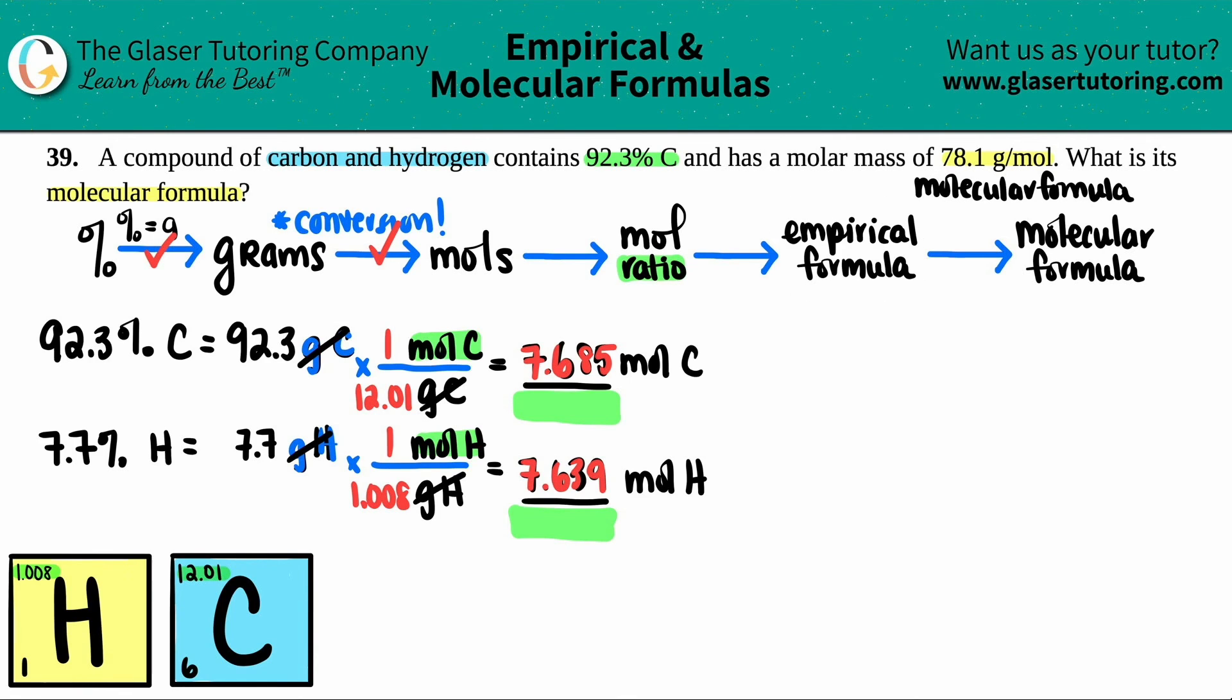Well, think about what an empirical formula is, because that's what we're trying to get to. The empirical formula is the most simplified formula. It is the smallest coefficients that can possibly exist with those combinations of elements. So simplest, smallest, go with that idea. All you're doing to go from your moles to your mole ratio is you're just dividing by the smallest number. So just look at your two numbers. In this case, you have two. And which one is smaller? 7.685 or 7.639? They're very close, but this one is smaller. So I'm going to divide both of them by 7.639.